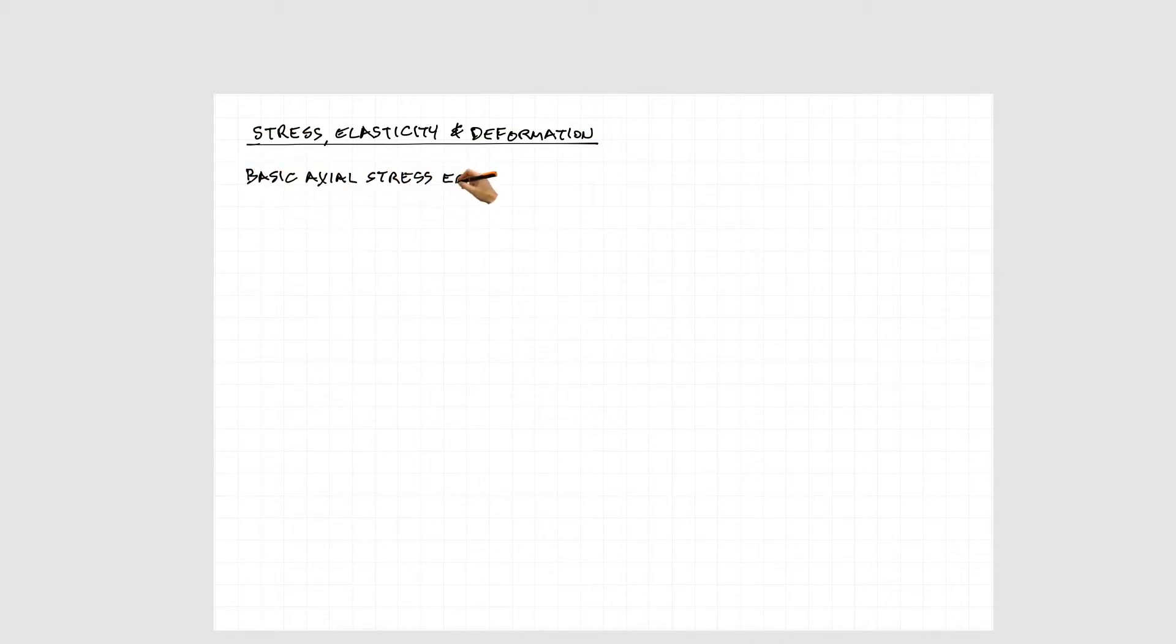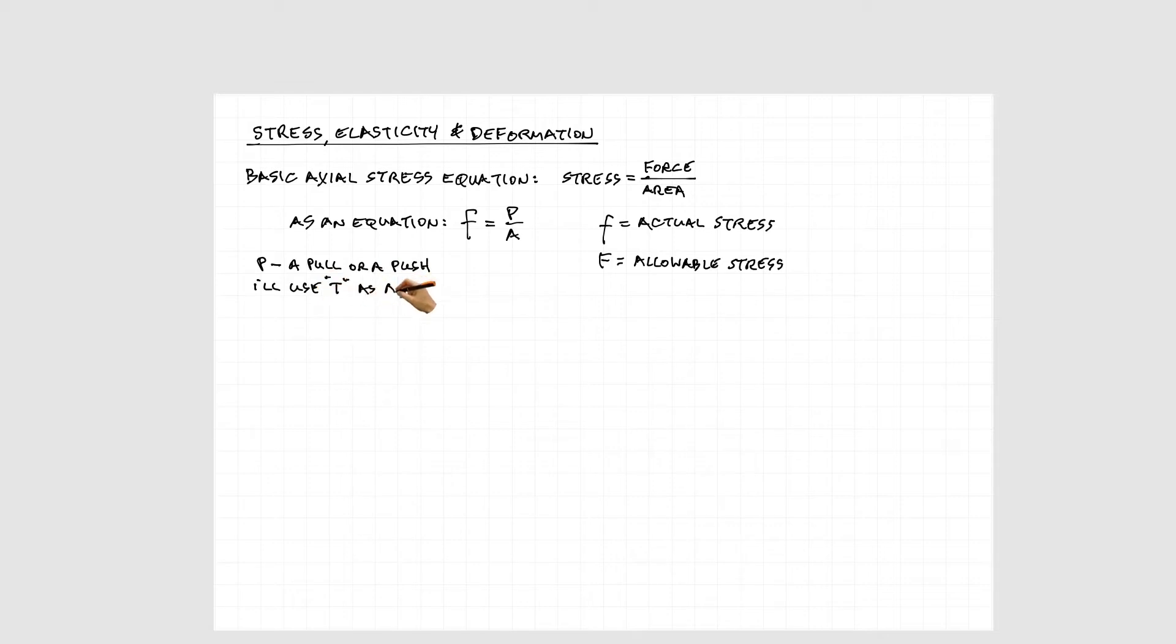The basic equation for axial stress is simply force divided by cross-sectional area. We write that mathematically as F = P/A, where F is our actual stress. We'll also be using a capital F as allowable stress, so those are two different things to be aware of.